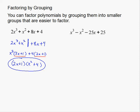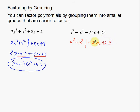Now with the second example, I'll go a little bit faster. I'm going to rewrite this, splitting it up into negative 25x plus 25. The reason I chose this example is for this second part, which I'll show you in a minute. Over here, I see variables in common — I see an x squared in common — so x minus 1 is what is left over after I factor that out. Over here, I see 25 in common.